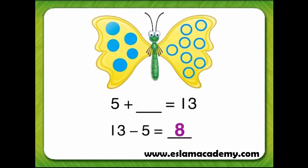8 is the missing addend. So, 5 plus 8 equals 13.